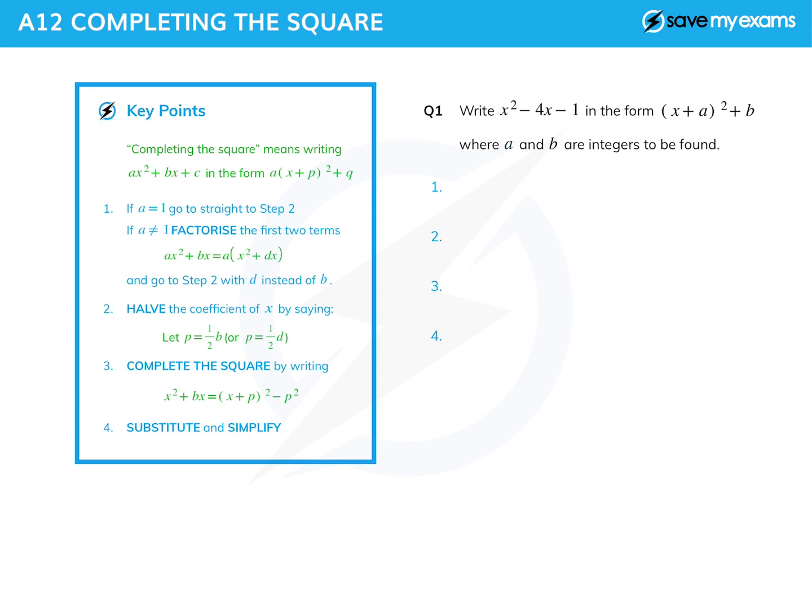Right, let's look at the technique called completing the square. Well, what does completing the square actually mean? It means taking your standard quadratic, ax squared plus bx plus c, and putting it in this sort of form here, where you have a bit squared and then a number at the end.